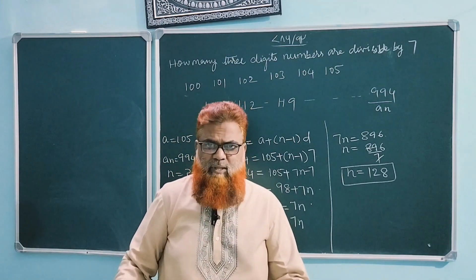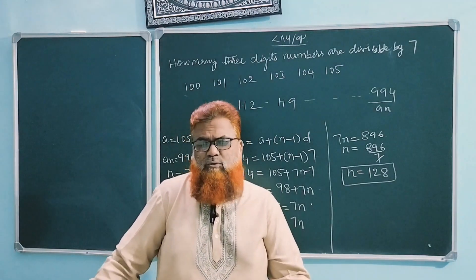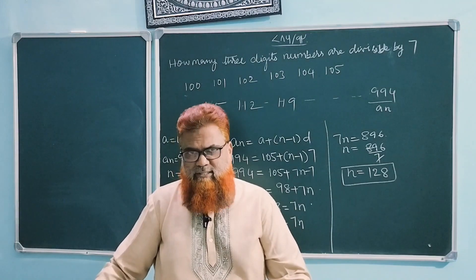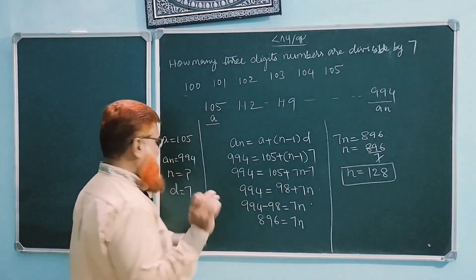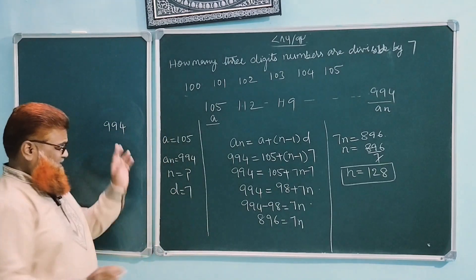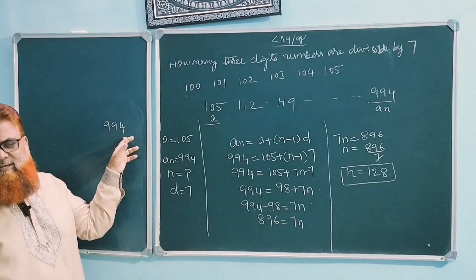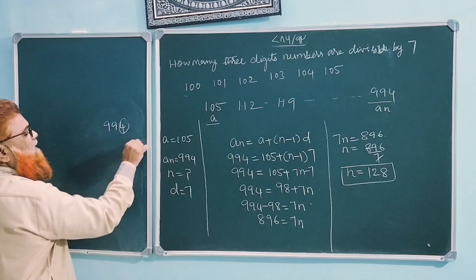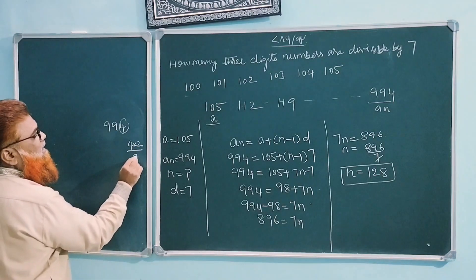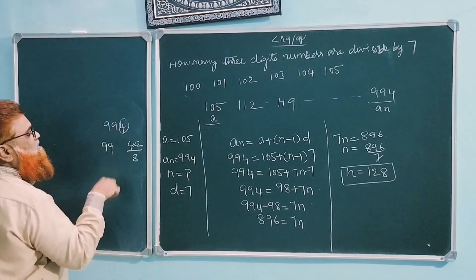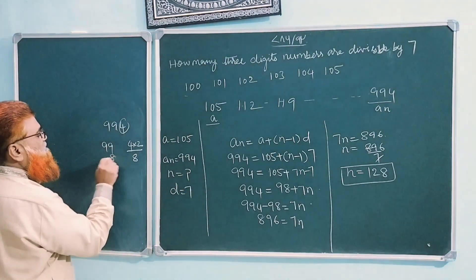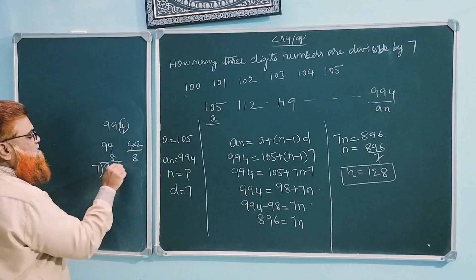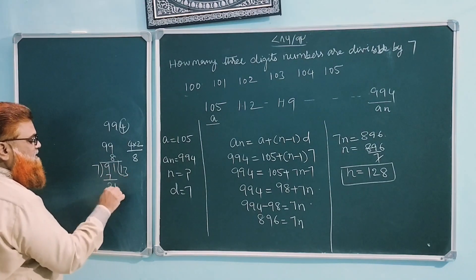What is the true test for divisibility of 7? In our syllabus books we have divisibility tests for 2, 3, 4, 5, 6, 8, 9, 10, and 11, but I would like to share the divisibility test for 7. Take the number 994: take the unit digit 4, double it to get 8, subtract from the remaining number 99. 99 minus 8 is 91. Is 91 divisible by 7? Yes — 13 sevens are 91.